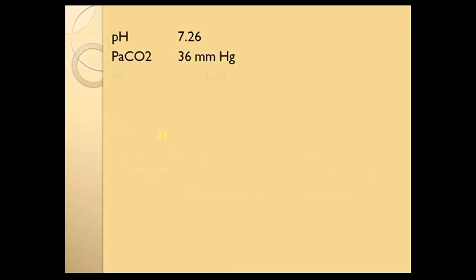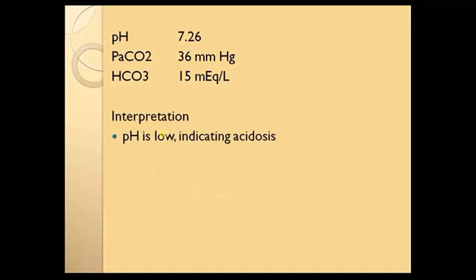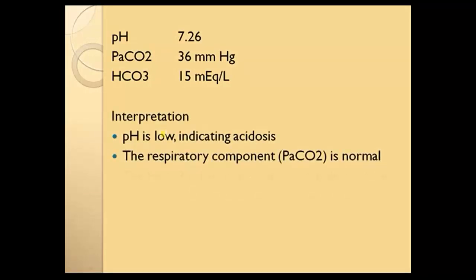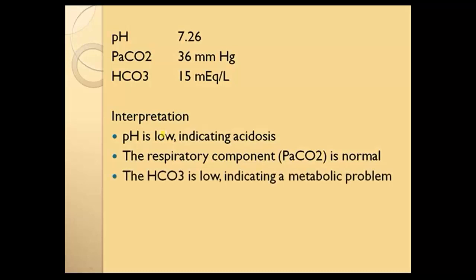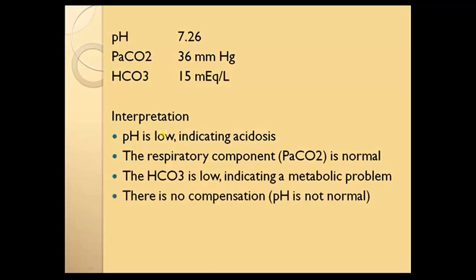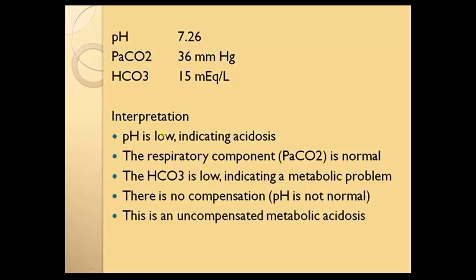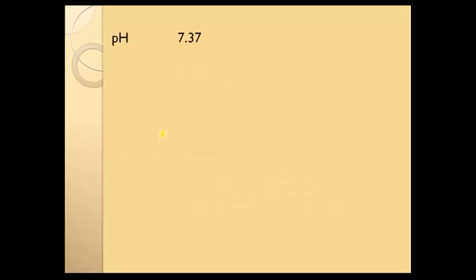The pH is low — this indicates an acidosis. The respiratory component, the PaCO2, is normal. The bicarb is low, indicating a metabolic problem. There is no compensation; the pH is not normal. So this is an uncompensated metabolic acidosis. It's getting kind of routine as the straightforward ones develop.